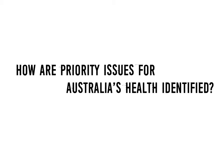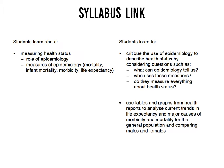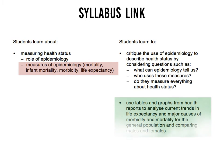This presentation will address the focus question: how are priority issues for Australia's health identified? We will focus on measuring health status with a particular focus on measures of epidemiology and morbidity, and using tables and graphs from health reports to look at current trends and major causes, particularly morbidity.